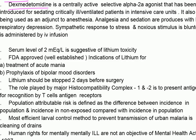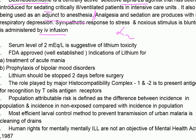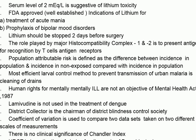Dexmedetomidine is a centrally active selective alpha-2 agonist introduced for sedating critically ill ventilated patients in the ICU. It is also used as an adjunct to anesthesia. Analgesia and sedation are produced with little respiratory depression, and it blunts the sympathetic response to stress. It is administered by IV infusion.